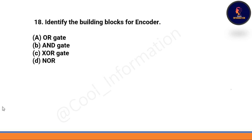Next question: Identify the building block of an encoder — option A: OR gate, option B: AND gate, option C: XOR gate, option D: NOR gate. The correct option is option A — OR gate is the building block of an encoder.